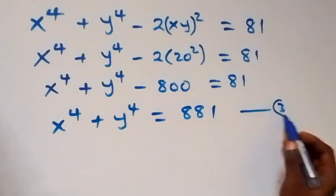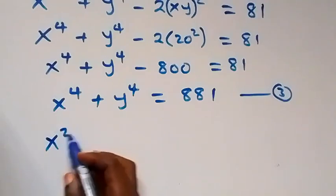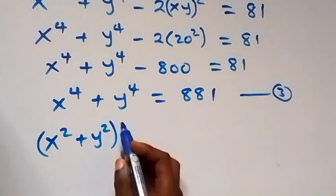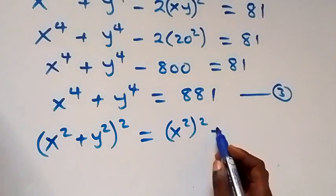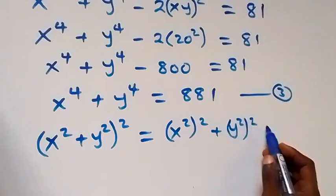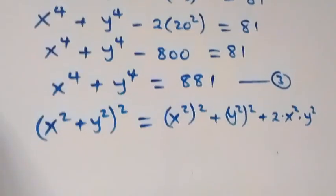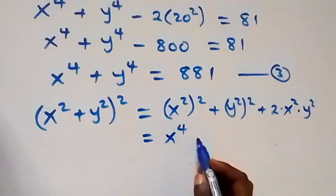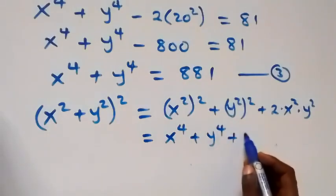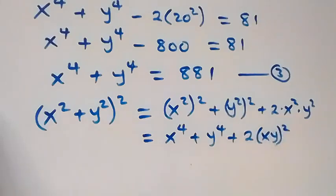Let's keep that as equation 3. Now let's expand x squared plus y squared, all squared. The expansion gives x squared squared plus y squared squared plus 2 times x squared times y squared, which simplifies to x to the power 4 plus y to the power 4 plus 2 times xy all squared.